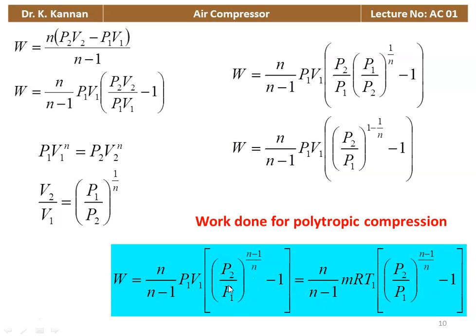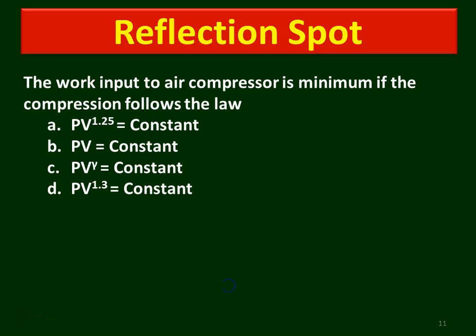We now have three different equations for calculating the work done of the compressor: isothermal, adiabatic, and polytropic compression. Reflection question: The work input to an air compressor is minimum if the compression follows the law — (a) PV^1.25 = constant, (b) PV = constant, (c) PV^γ = constant, (d) PV^1.3 = constant. The correct answer is PV = constant. The work done is minimum in the case of isothermal compression process.